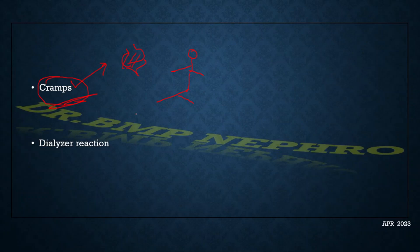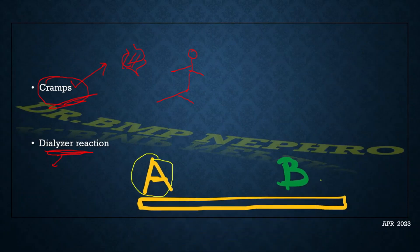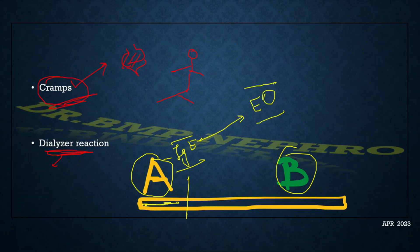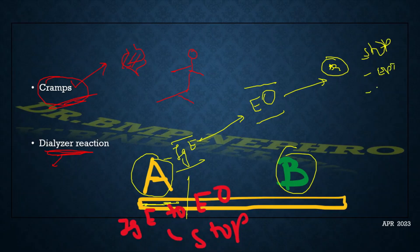An important complication is the dialyzer reaction, with two types. Type A is an IgE-mediated reaction occurring at the beginning of dialysis, caused by ethylene oxide used in the dialyzer manufacturing disinfection process. It is a severe reaction requiring dialysis to be stopped, with epinephrine and steroids. Type B is a minor complement-mediated reaction occurring later in dialysis that usually resolves without serious consequences, allowing dialysis to continue.